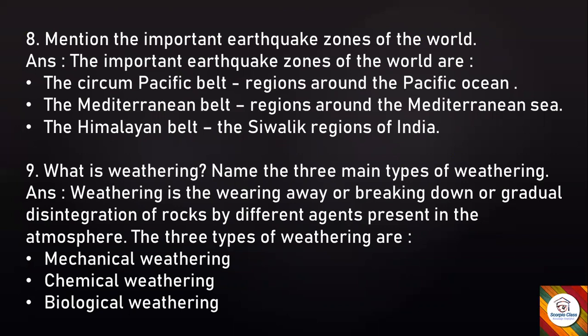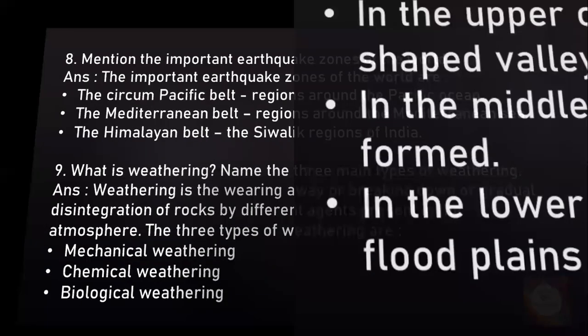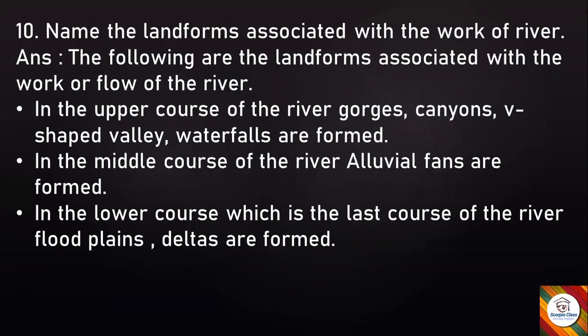Question: What is weathering? Name the three main types of weathering. Answer: Weathering is the wearing away, breaking down, or gradual disintegration of rocks by different agents present in the atmosphere. The three types of weathering are Mechanical Weathering, Chemical Weathering, and Biological Weathering.